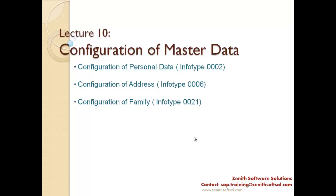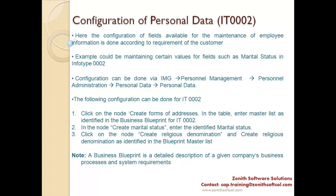We'll cover info type 2 (personal data), info type 6 (address), and info type 21 (family). Info type 2 has fields like first name, last name, and birth date. First name and last name are free text fields — you don't have to configure anything for those. But there are some fields for which you must configure the values in the back-end, and only then will those values appear in the drop-down in the info type.